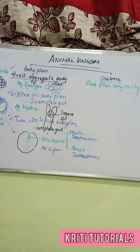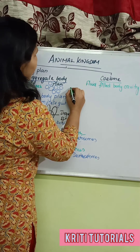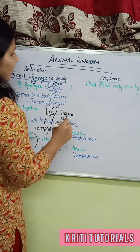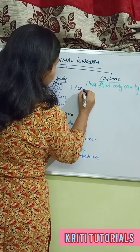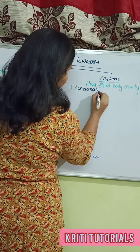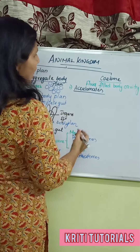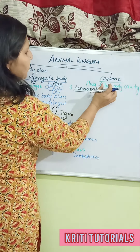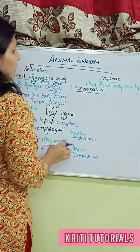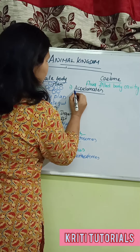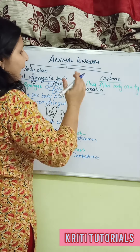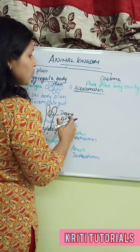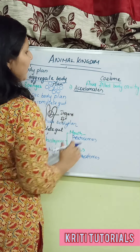Coelom is nothing but the fluid-filled body cavity. Coming to the coelom, it is again of many types. The first type is called acoelomate. If we add 'A' before coelom, it implies there is the absence of coelom — the absence of the fluid-filled body cavity.